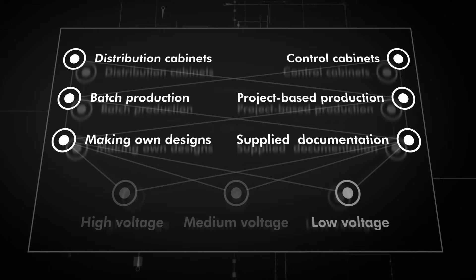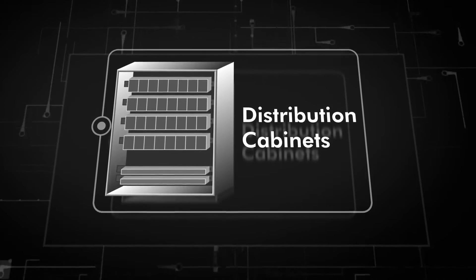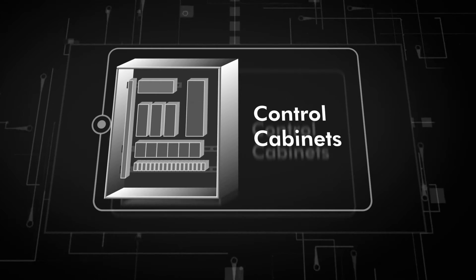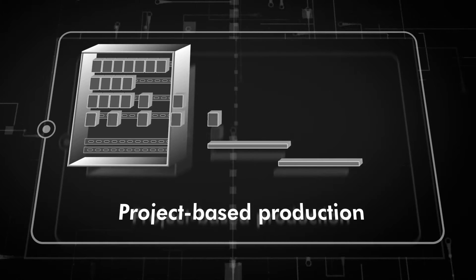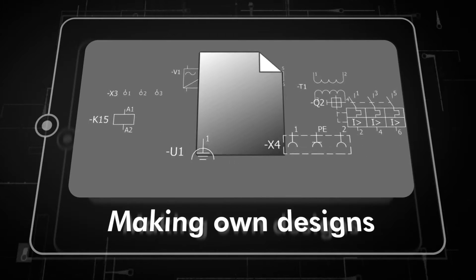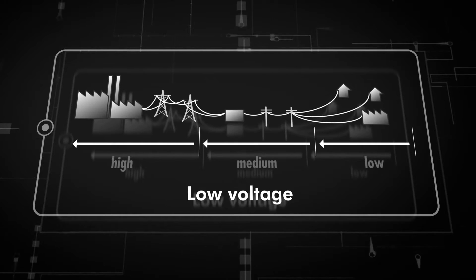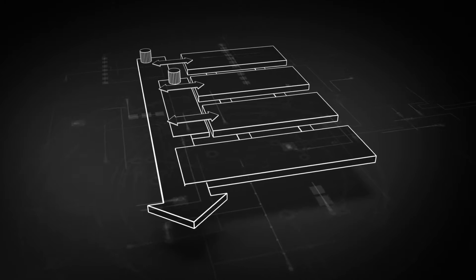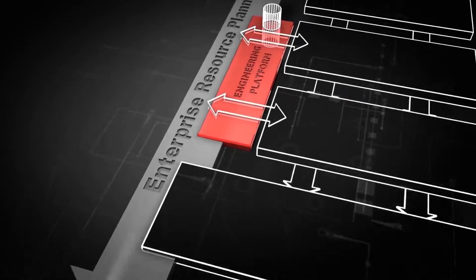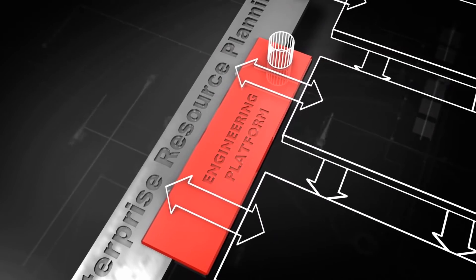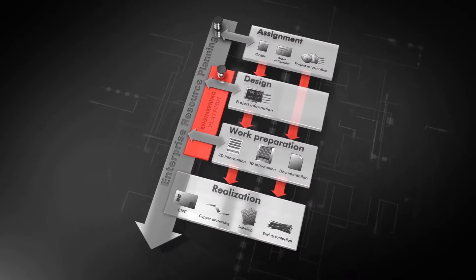Every panel builder will benefit from implementing an engineering process, regardless of whether manufacturing distribution or control cabinets, implementing a serial or project-based production, making own designs or using drawings provided by the customer, or constructing high, medium or low voltage cabinets. The way you set up your digital engineering platform and how you connect into your ERP system strongly influences the extent to which you can optimize product development and the production process.